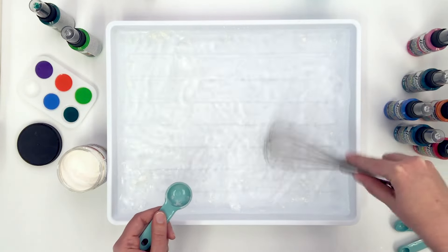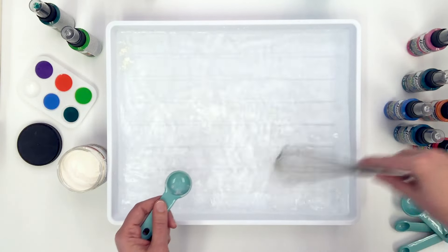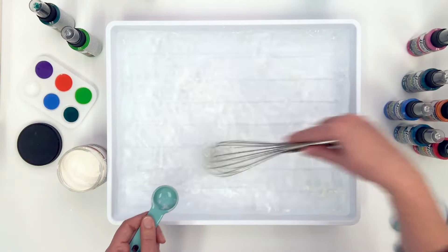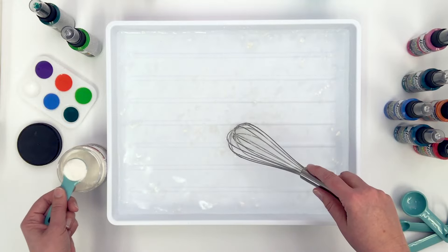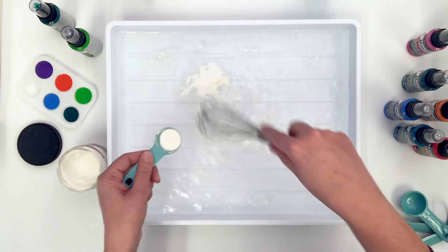Slowly sprinkle the Magic Medium over the water, mixing as you go along. Allow the size to rest for a minimum of 20 minutes. You may see some white clumps of Magic Medium in the water even after mixing, but don't worry, they'll dissolve as the solution sits.